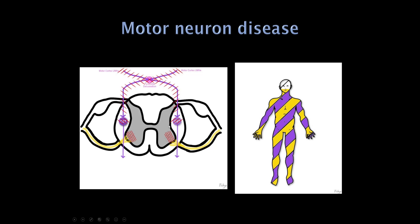The drawing shows in purple the upper motor neuron findings and in yellow the lower motor neuron findings. It goes from the mouth down because brainstem involvement in ALS is mainly in the medulla. Things that are higher up, like eye movements and vision, are relatively preserved in ALS.